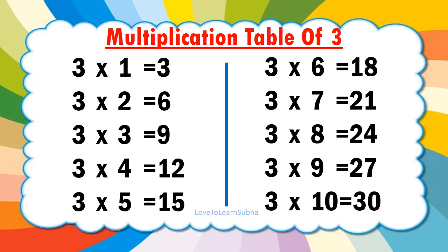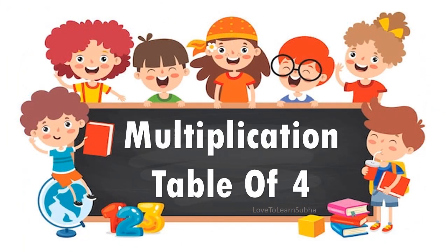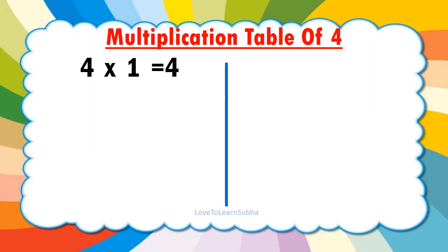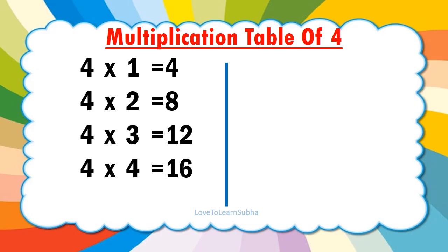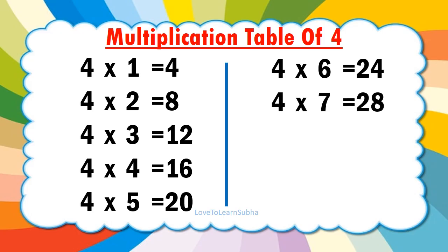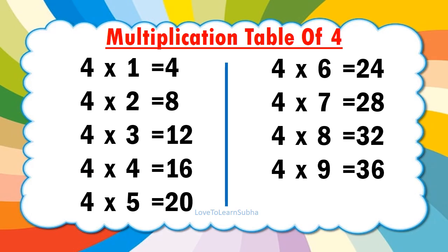Multiplication table of 4. 4 9s are 36, 4 7s are 28, 4 8s are 32, 4 9s are 36, 4 10s are 40.